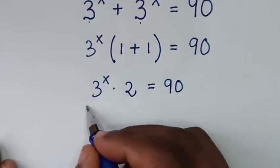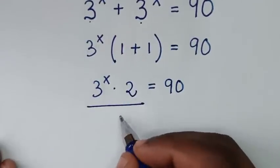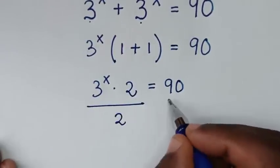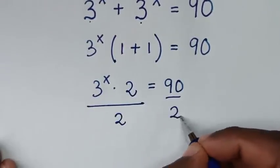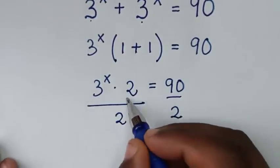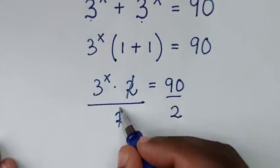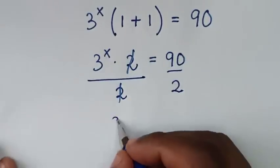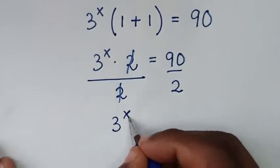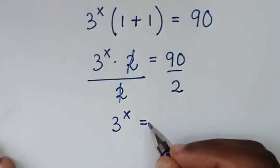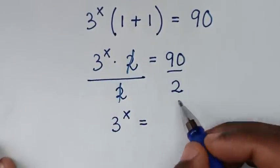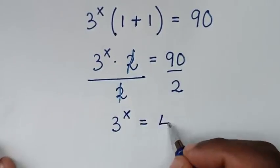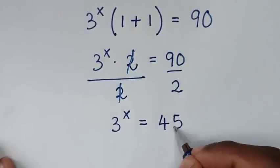We will divide by 2 on both sides. So 2 and 2 will cancel, and it will be 3 power of x is equal to 90 divided by 2, which is 45.